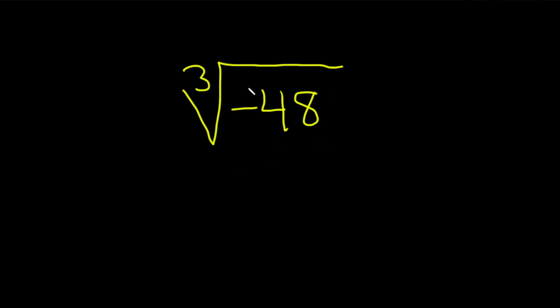But before you do that, you want to factor this. So let's write negative 48 as a product of primes. So 48 is 6 times 8.